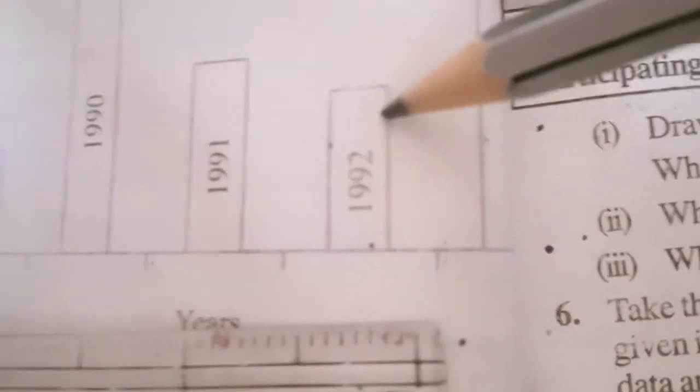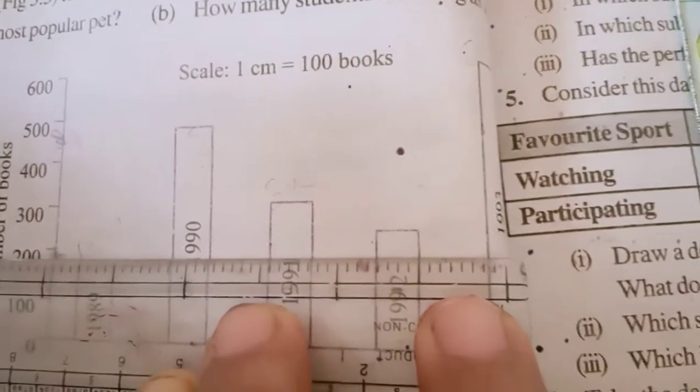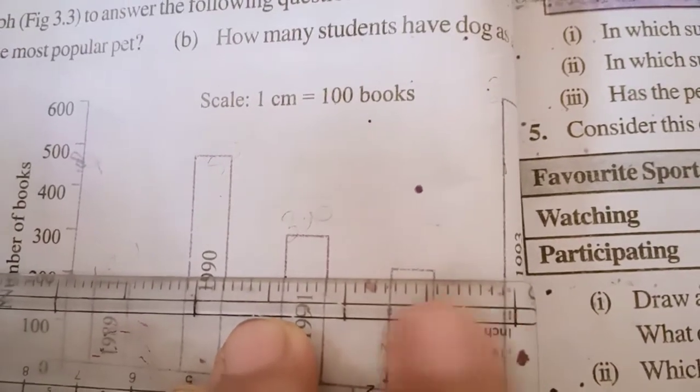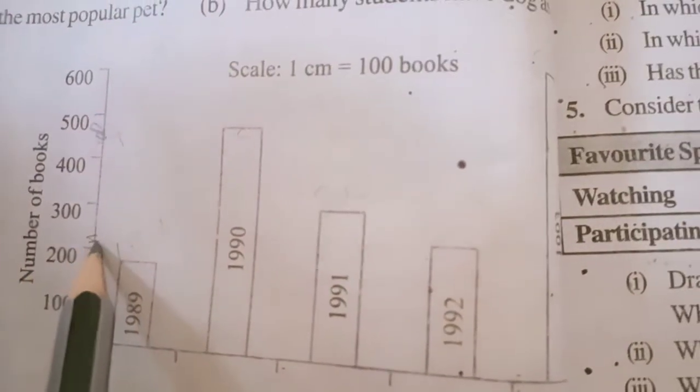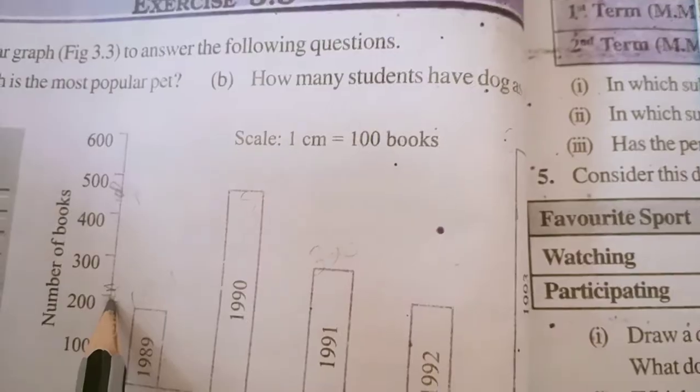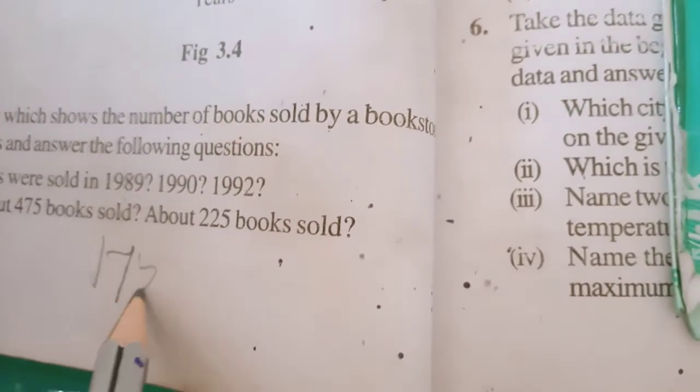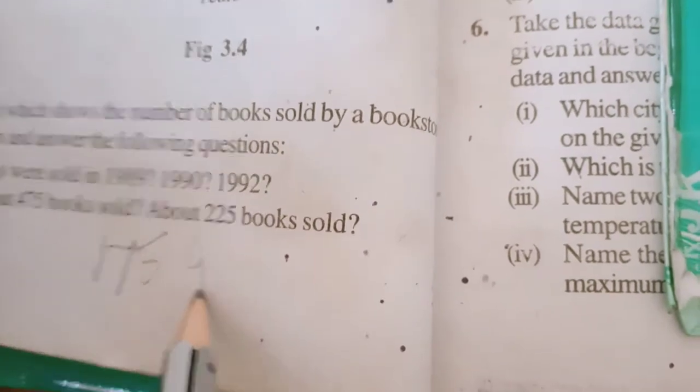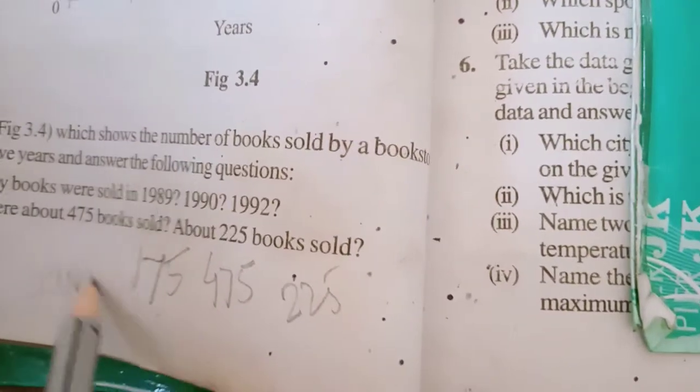In year 1992, see this line now. This is 200 line, and above the 200 line this is going on. We will mark it. This is the marking. It is not 250 and it is not 200. Then it will be 225. For 1989 there are 175, for 1990 there are 475, and in 1992 there are 225 approximately.